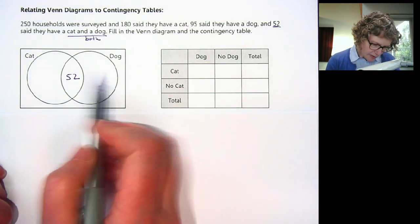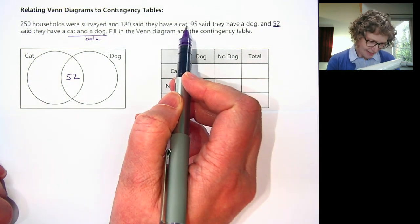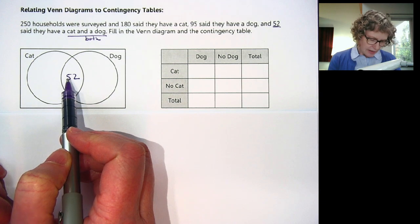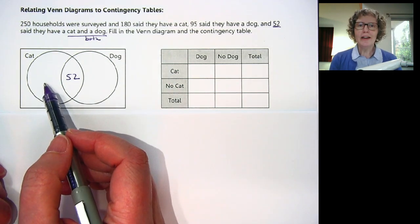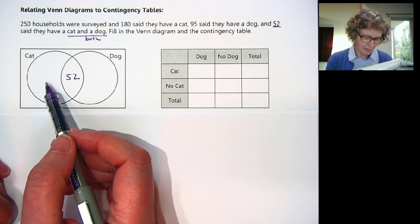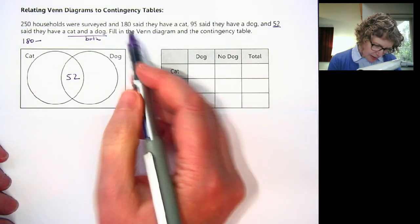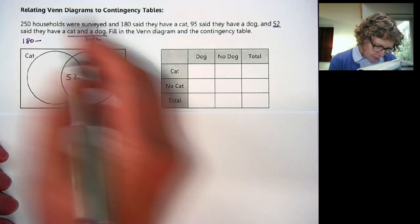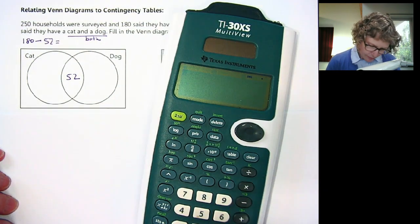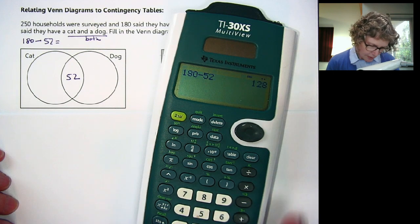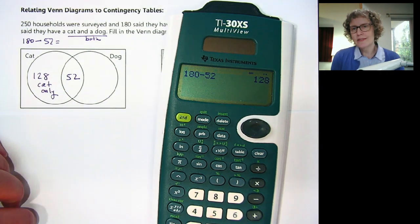The reason we can't go right to the outer sections is this is cat only, but 180 said they have a cat. So this 52 is included in the 180 because these two numbers together will add up to 180. So I'm going to take 180 and subtract the 52 that also have a dog. 180 minus 52 is 128, which is essentially cat only — or at least in terms of cats and dogs; they could have a fish or rabbit.